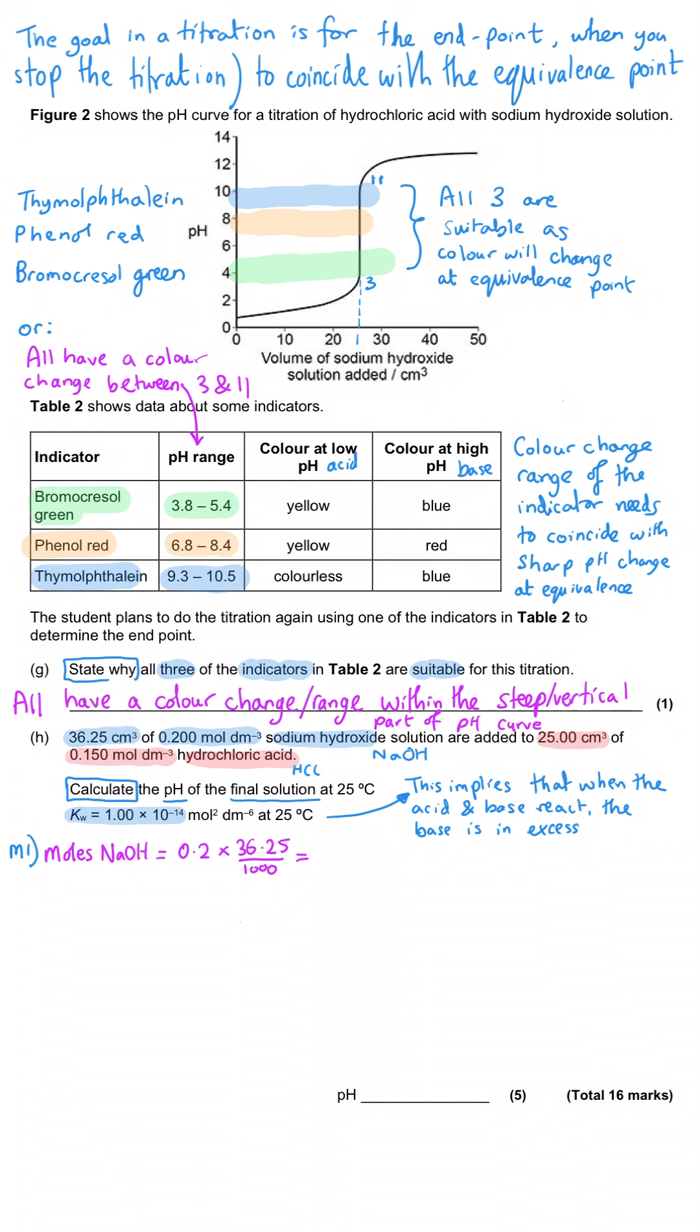The sodium hydroxide is 36.25 multiplied by 0.2 divided by 1000, because we need our volumes to be in decimetres cubed, and that gives us 7.25 times 10 to the minus 3 moles. The concentration of hydroxide ions would be the same, since there is one hydroxide for every sodium hydroxide. Similarly for the hydrochloric acid, the amount in moles would be 25 divided by 1000 multiplied by 0.15, so that's 3.75 times 10 to the minus 3 moles of that, which again will be the same as the moles of hydrogen.